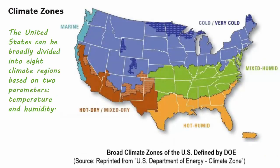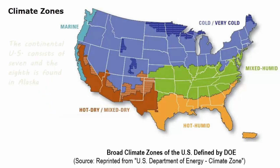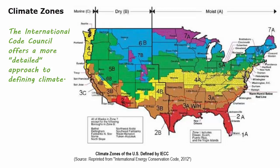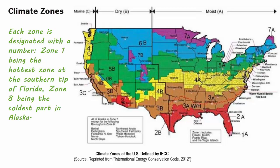The United States can be broadly divided into eight climate regions based on two parameters: temperature and humidity. The continental U.S. consists of seven, and the eighth is found in Alaska. The International Energy Conservation Code offers a more detailed approach to defining climate, where each zone is designated with a number — zone one being the hottest at the southern tip of Florida and zone eight being the coldest part of Alaska.